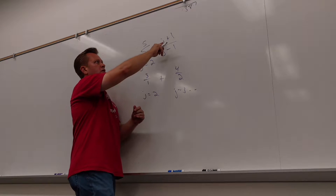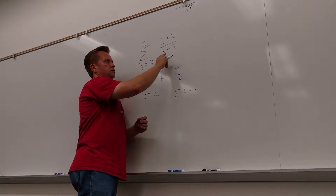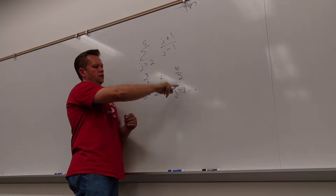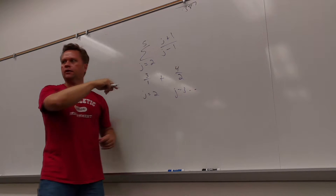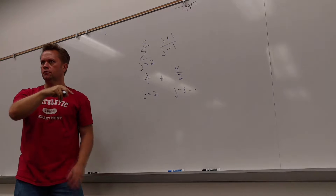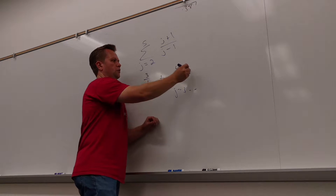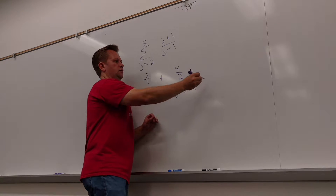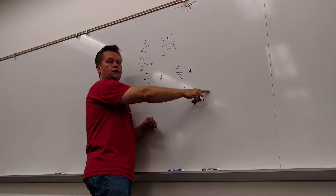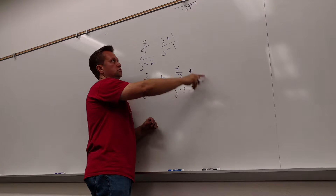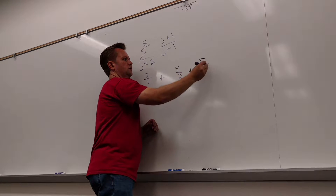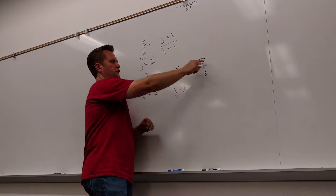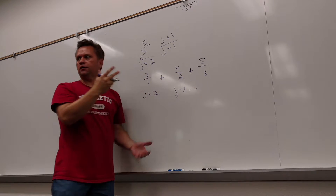If j is 3, then 3 plus 1 is 4 and 3 minus 1 is 2, so that number is going to be in between those just because of the way it's set up. Now j is 4 — 3, 4, 5 over 1, 2, 3. Do you see the pattern?